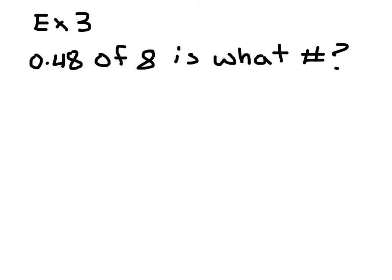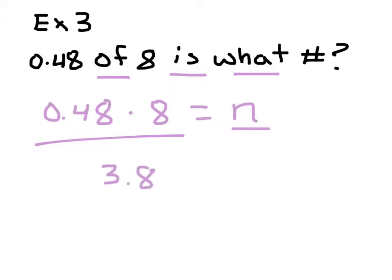Example three. Again, all these are set up the same once you identify those key words: of, what, and is. So 0.48 of 8 is what number? How am I going to get n? You're just going to multiply 0.48 times 8. So I'm going to take 0.48 times 8, and I get 3.84 is the number.